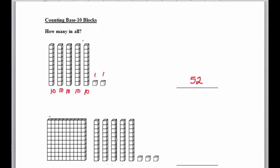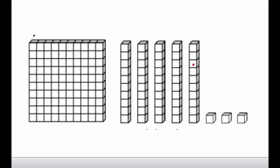Now in the second example we have three things going on. We have the cubes, we have the sticks, and we also have the block. Now the block has 10 sticks inside of it, so 10 times 10 is equal to 100. So let's go ahead and label that block 100.